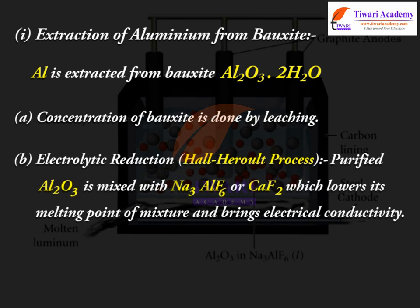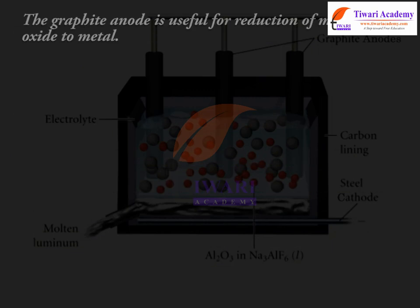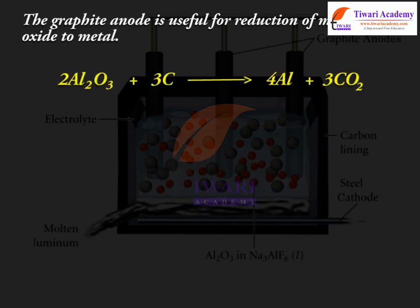Purified Al₂O₃ is mixed with Na₃AlF₆ or CaF₂, which lowers the melting point of the mixture and increases electrical conductivity. The fused mixture is electrolyzed using a number of graphite rods as the anode and carbon lining as the cathode. The graphite anode is useful for the reduction of metal oxide to metal: 2Al₂O₃ + 3C → 4Al + 3CO₂.